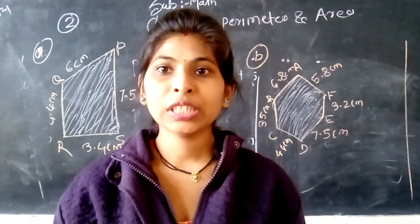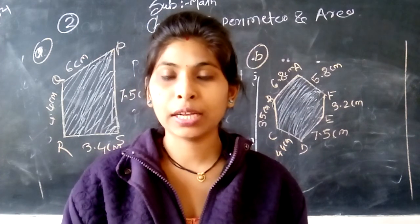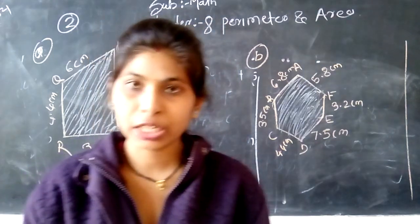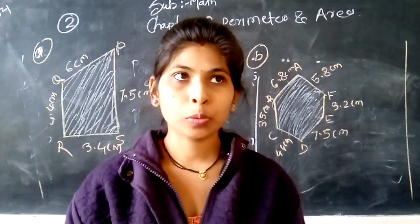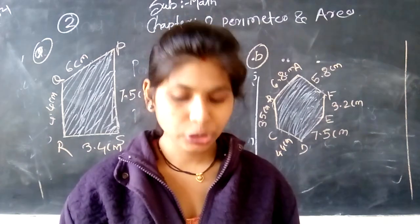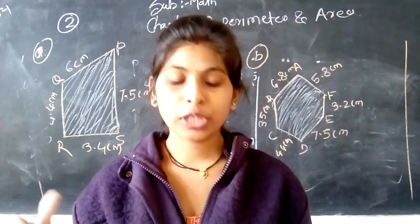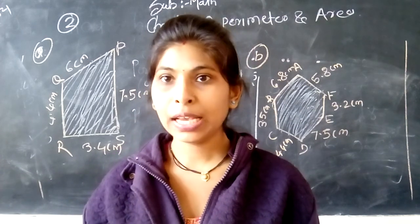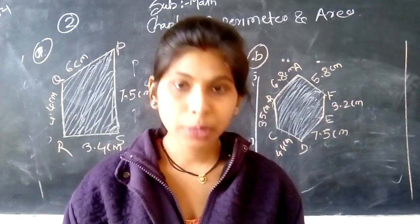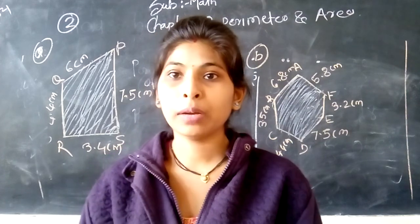In the previous lecture we discussed what is perimeter of rectangle and what is the perimeter of square and we calculated problems on square and rectangle. So in this lecture we will solve the problems from question page number 138, question number 2, problems A, B and C.